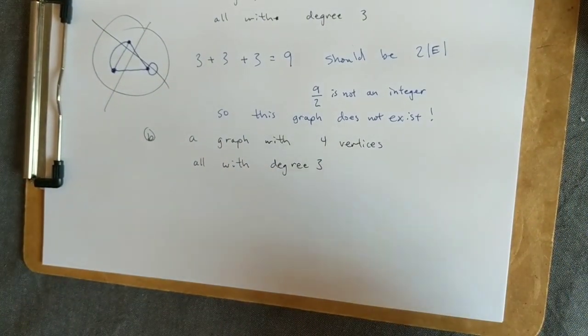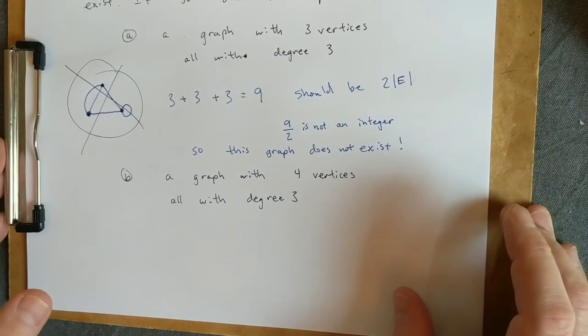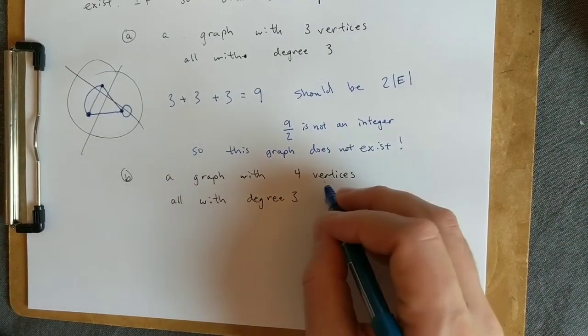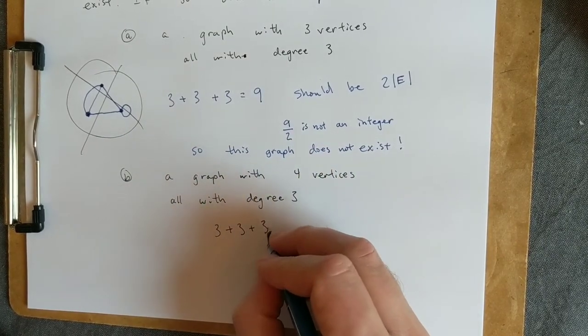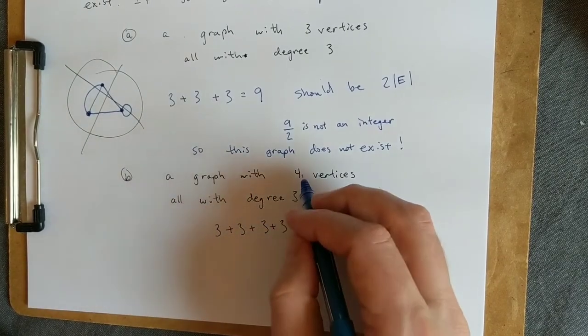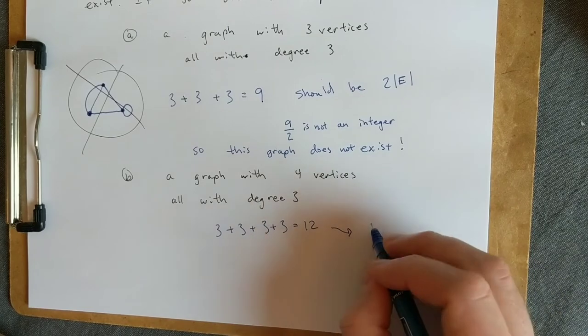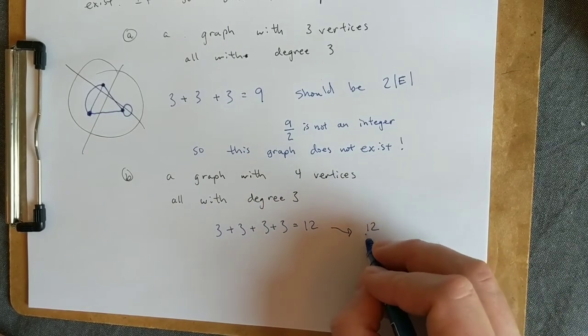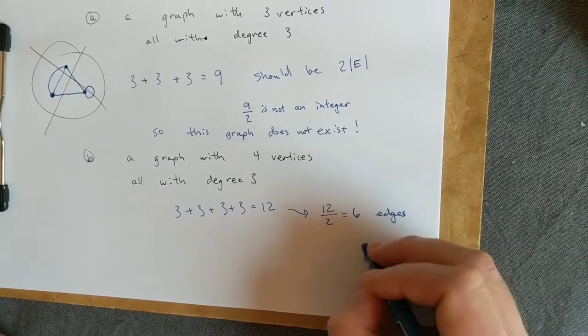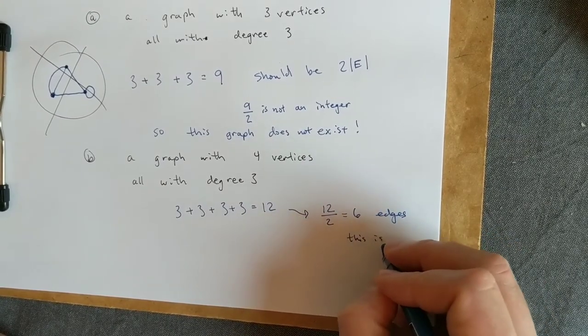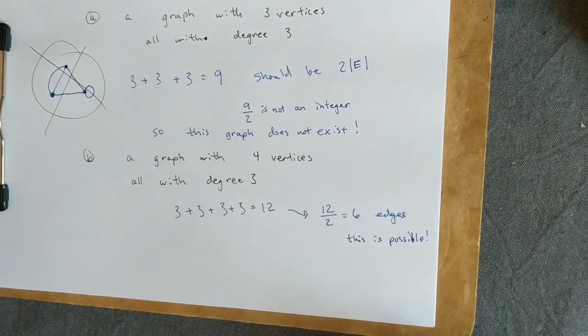Let's look at one that does work. Let's verify that we should have an integer number of edges. There are four vertices, each with degree three. So I'm adding three four times, and that gives me 12. This is possible because 12 is an even number. The Handshaking Lemma tells me that I should have six edges. This is possible, but to really verify it, we should draw a picture of this.